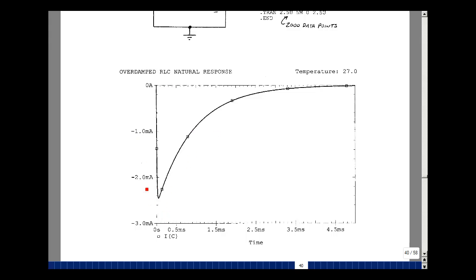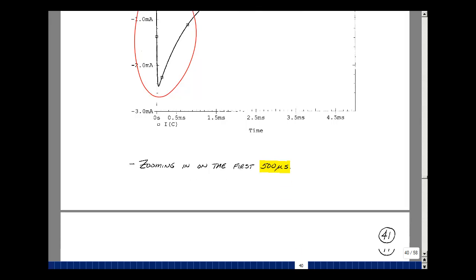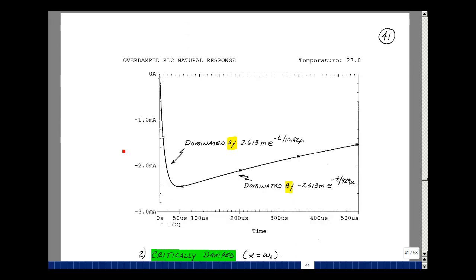Let's zoom in on this part right here. I've got 2,000 data points total. Looking at the first 500 microseconds, what you're seeing is this term doesn't change very much in the first 50 microseconds, so it looks like about minus 2.613. But this term is changing rapidly in that same interval. It's really adding this term to this one, pulling the value back up here. Eventually this term dies out and we're left with just this term. As t approaches five time constants, this goes back to zero. This is the shape of an overdamped natural response.